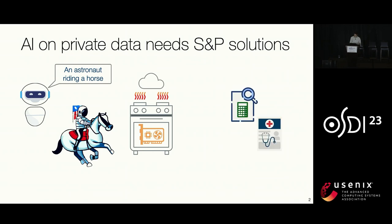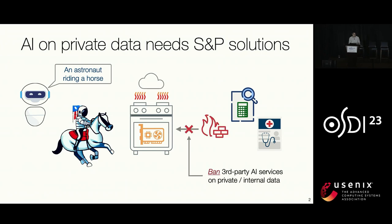On the other hand, we have a lot of private data, for example financial data for corporations and medical records. People would like to use AI to generate advice or reports for filing and emails, et cetera. However, there are significant security concerns about leaking this private sensitive data to AI models. Today companies like Apple or even JP Morgan have a simple policy banning all third-party AI services, such as ChatGPT, on private and internal data. Therefore, AI using private data needs a good security and privacy solution.